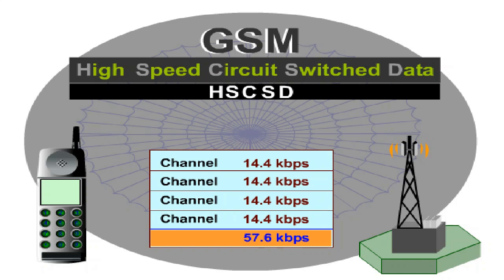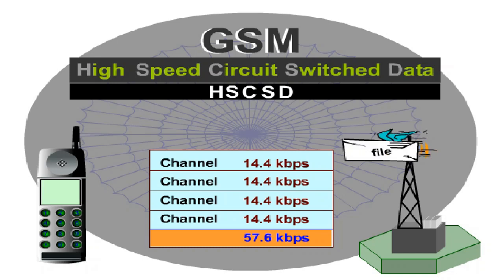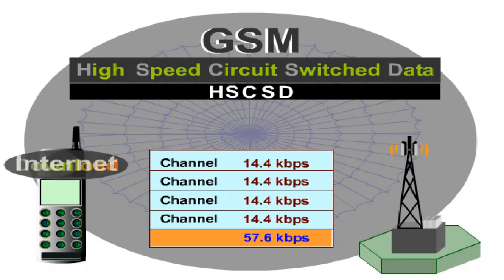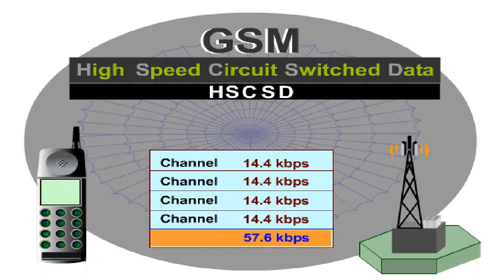This allows, for example, faster email transfer, faster file transfer, and speedier, and thus cheaper, web browsing and data download from the internet. As most services used require higher data rates in the downlink than in the uplink, HSCSD shows an asymmetrical implementation — that means three time slots in the downlink and one in the uplink. This also facilitates mobile station design and avoids battery capacity problems.